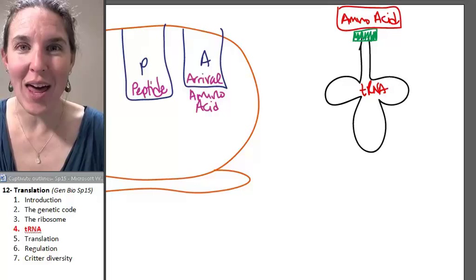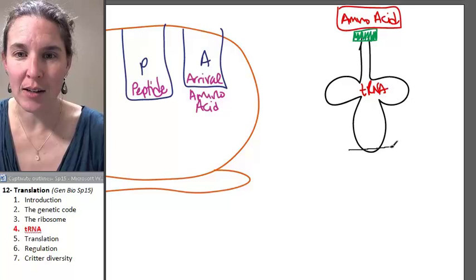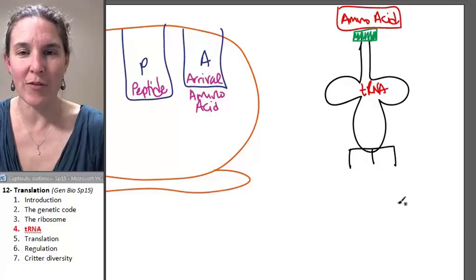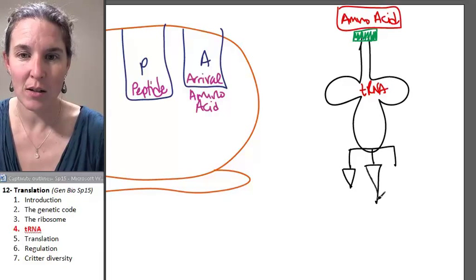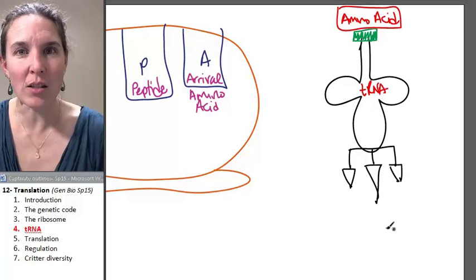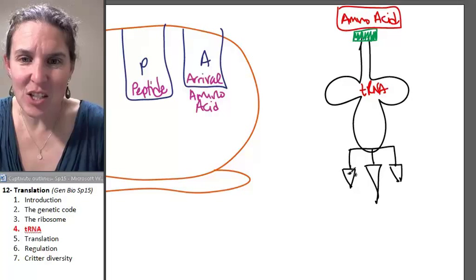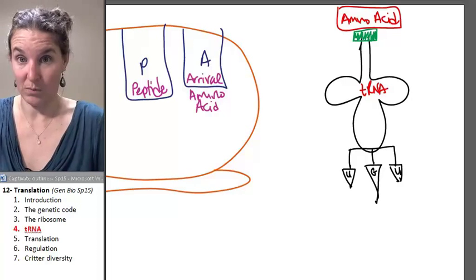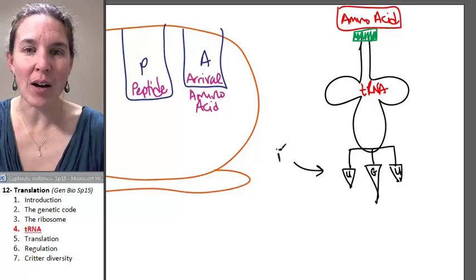Guess what else a tRNA has? Now, this is a Wendy-fied version, of course. What did I just draw you? I drew you three bases. Let's just make up some letters: U, G, U. That is called an anticodon.